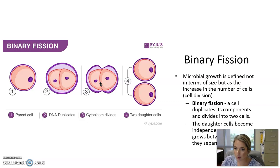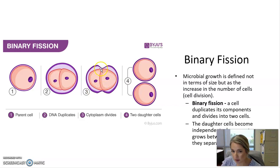Here we have a parent bacterial cell going through binary fission. It makes a copy of its DNA so there are two copies, then the cytoplasm and envelopes pinch inward until the cell generates two new daughter cells. This is the process by which a bacterial cell duplicates itself, known as binary fission.